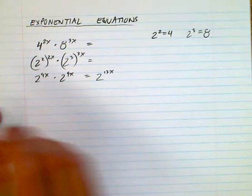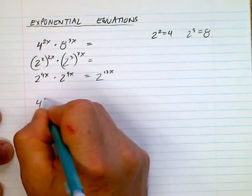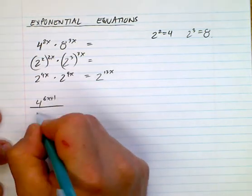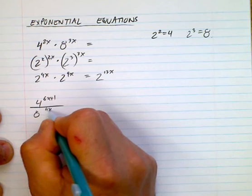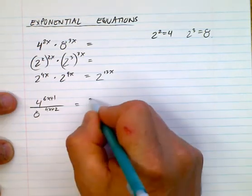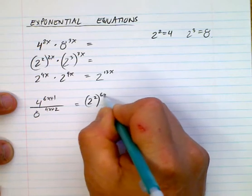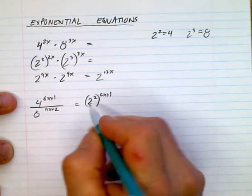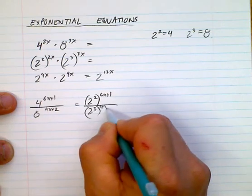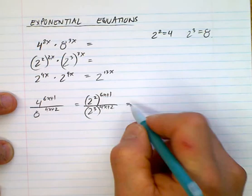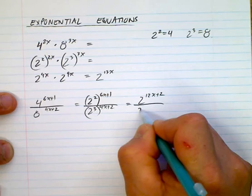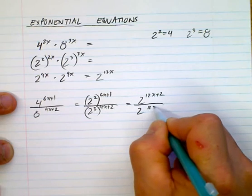We can look at another one here. If I gave you 4 to the power of 6x plus 1 over 8 to the power of 4x plus 2. Hopefully, you can see that we're doing the same thing, right? 4 is 2 squared, and then you have 6x plus 1 is the exponent on the whole thing, all over 8, which can be rewritten as 2 cubed. It still has an exponent of 4x plus 2. Now we multiply it out again. This becomes 2 to the power of 12x plus 2. This becomes 2 to the power of 12x plus 4.